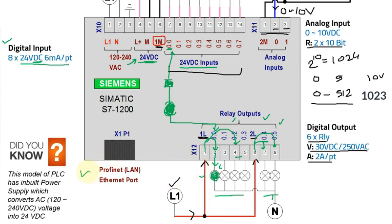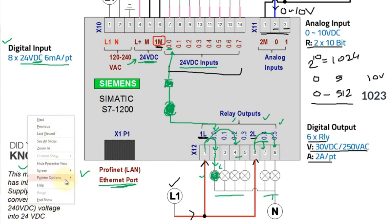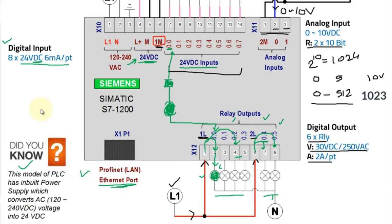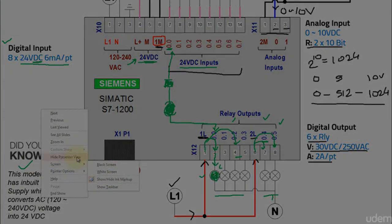There is also a Profinet LAN Ethernet port to connect to your PC for programming. The inbuilt power supply converts AC voltage to DC voltage.